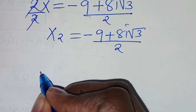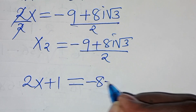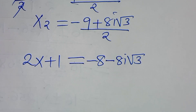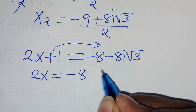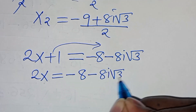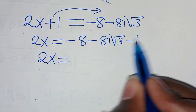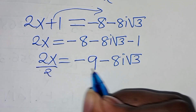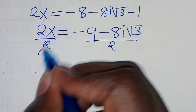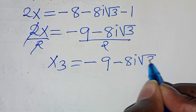For x3, we have 2x plus 1 equals u3, which is minus 8 minus 8i square root of 3. Taking plus 1 to the right-hand side, we have 2x equal to minus 8 minus 1, which is minus 9, minus 8i square root of 3. Dividing both sides by 2, x3 equals minus 9 minus 8i square root of 3 over 2.